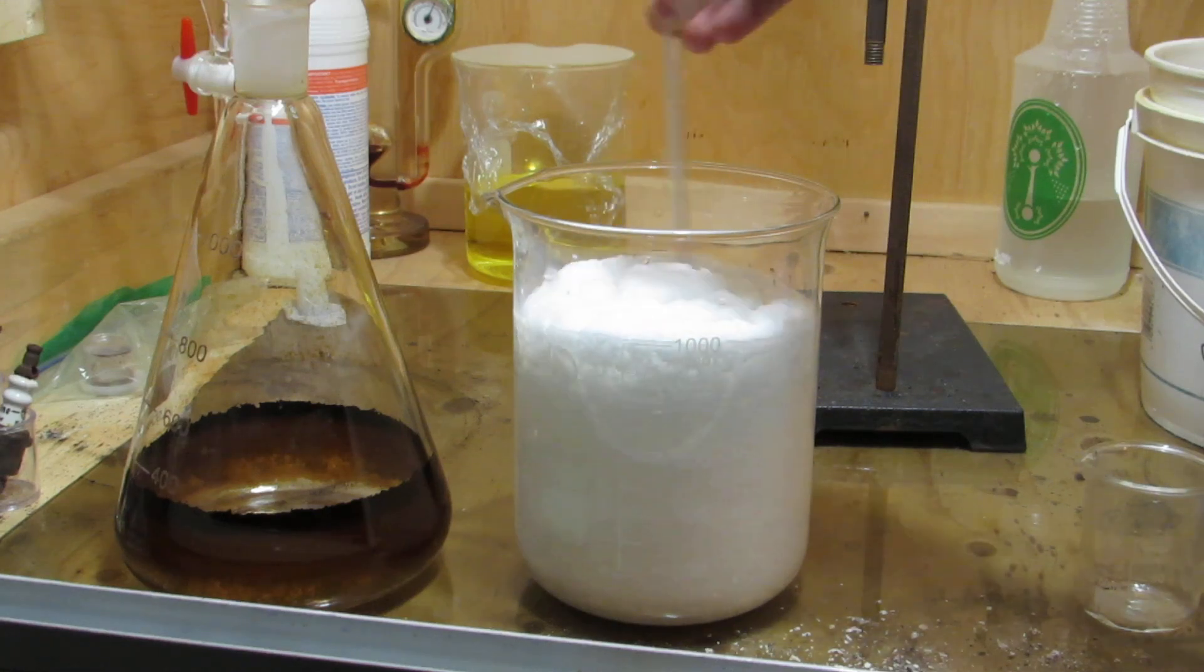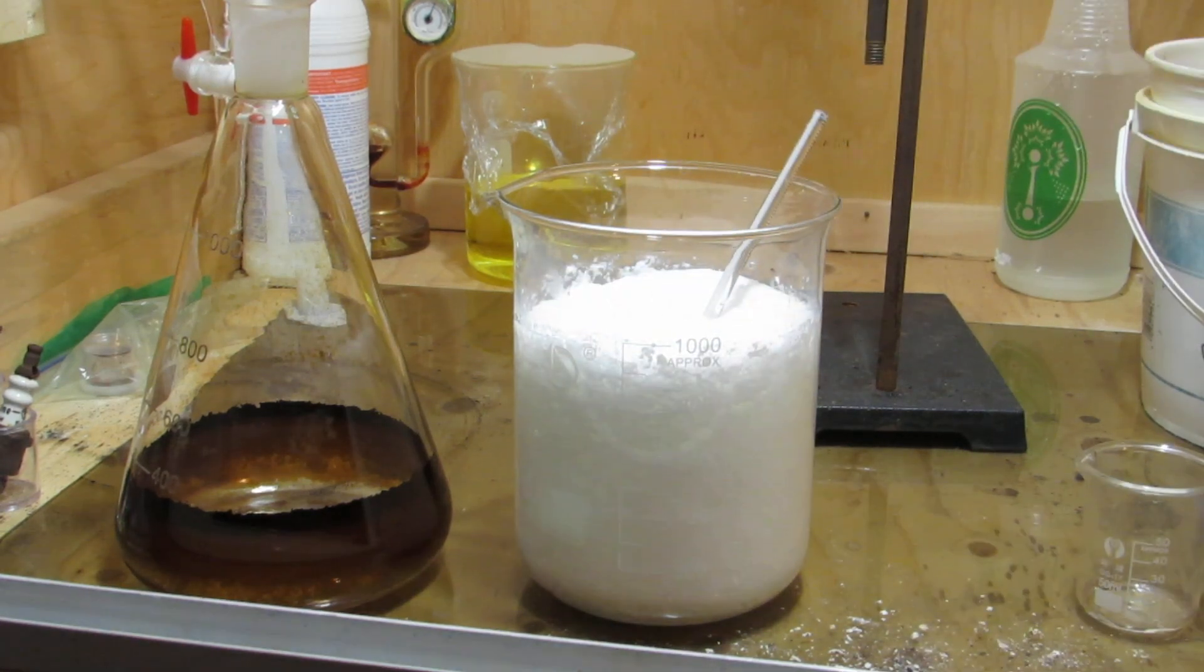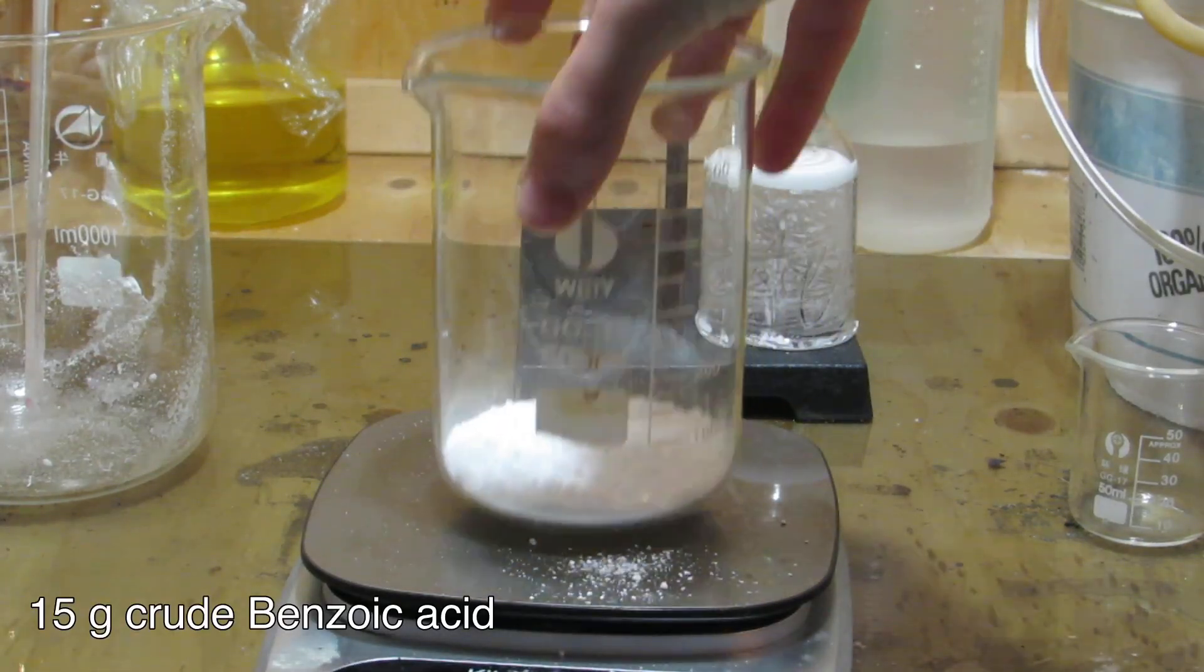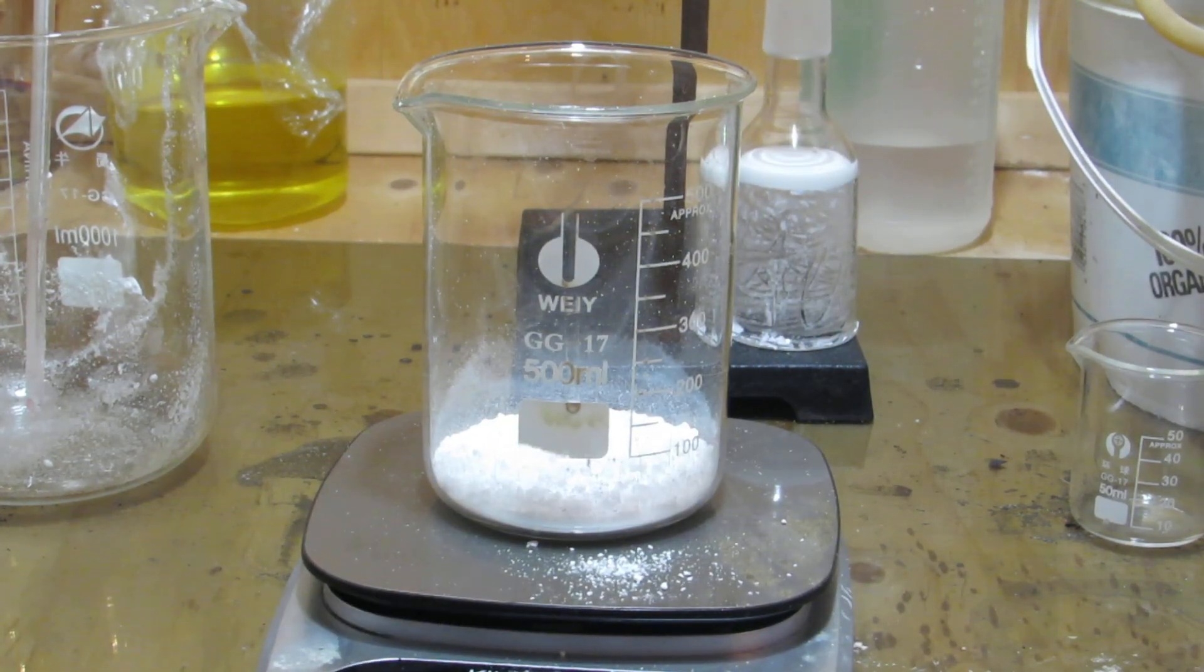Once the bubbling died down, the benzoic acid was filtered off, and then the remaining solution was chilled in the fridge to crystallize out a bit more benzoic acid. After drying, 15 grams of crude benzoic acid was obtained.